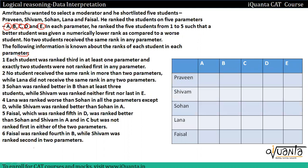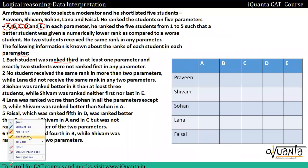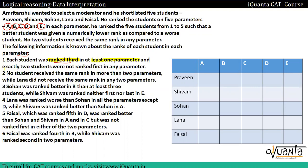The following important conditions are given: Each student was ranked third in at least one parameter. Exactly two students were not ranked first in any parameter. No student received the same rank in more than two parameters. Lana did not receive the same rank in any two parameters — meaning Lana's ranks will be all different, one through five in some order.